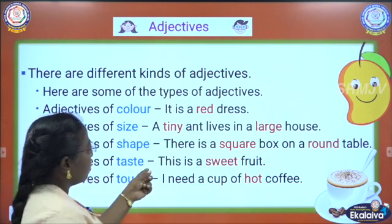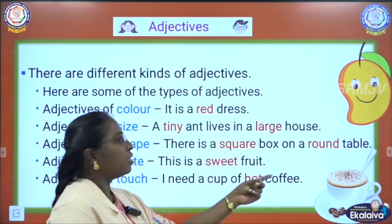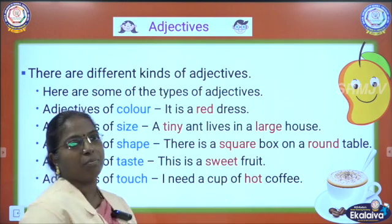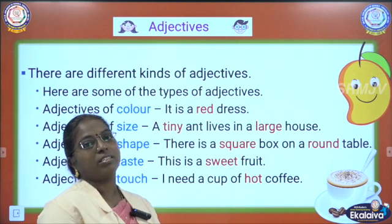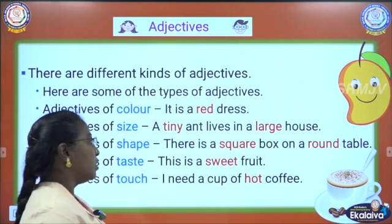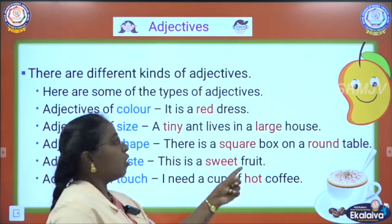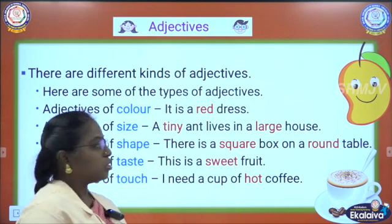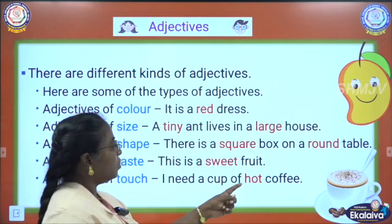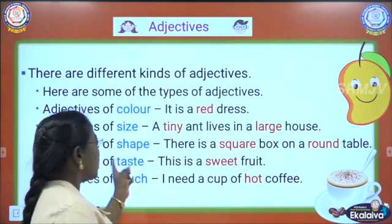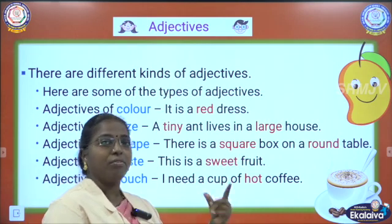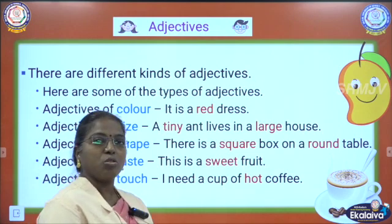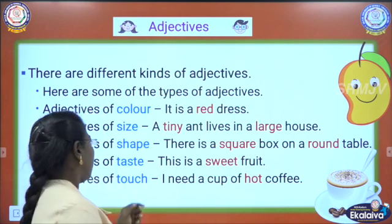And adjectives of shape — there is a square box on a round table. We are describing the shape, whether it is a rectangular table or square table. It is a square box on a round table. How is the table? It is round in shape. So round and square are adjectives of shape. Like that we can say any shape — circle — it is also an adjective of shape.